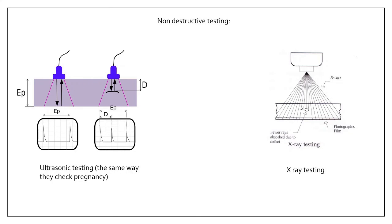Non-destructive testing lets you check the quality of products that are up and running when you can't physically get inside them. Ultrasonic testing — the same technology used in pregnancy scans — sends ultrasonic waves through a material; if there are any cracks or defects, the waves bounce back differently and show lines on a monitor. X-ray testing also reveals cracks or defects, but ultrasonic testing is preferred because x-rays can be dangerous and even deadly if people are exposed for too long.